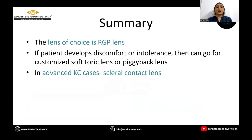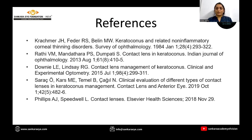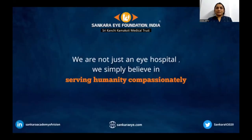To summarize, RGP lenses are the lens of choice for keratoconus. If the patient develops discomfort or intolerance, they can go for soft customized or toric lenses, and in advanced cases, scleral contact lenses are ideal. Thank you for allowing me to give this presentation.